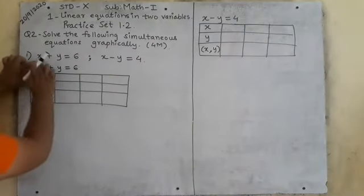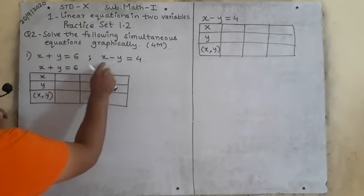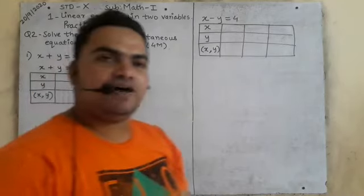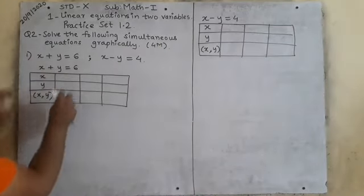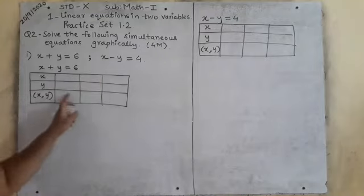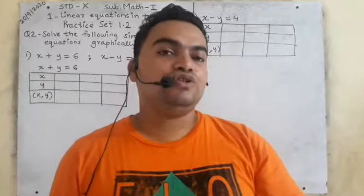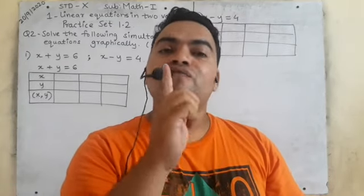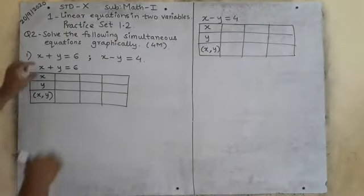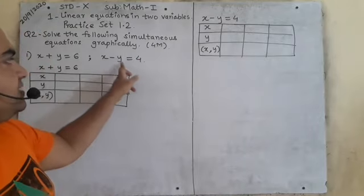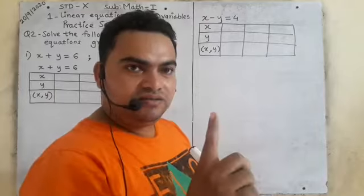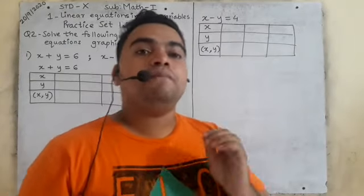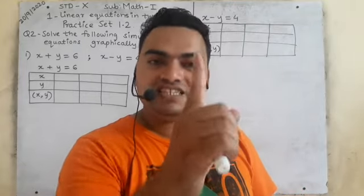The first equation is x plus y equals 6, and the second equation is x minus y equals 4. First we take the first equation. I have drawn 3 columns, which means we must find a minimum of 3 solutions for each equation. For this equation, we need 3 solutions. For x minus y equals 4, we also need 3 solutions.